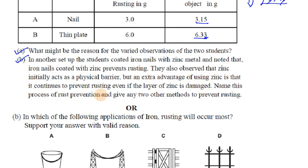Name this process of rust prevention. In this case, the process where iron is coated with zinc to prevent rusting is called galvanization.